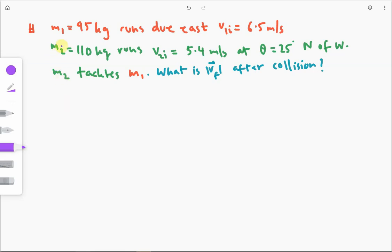In this example, we have two football players, one M1 with a mass of 95 kilograms, running due east with a speed of 6.5 meters per second.